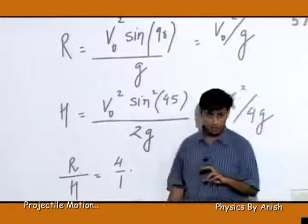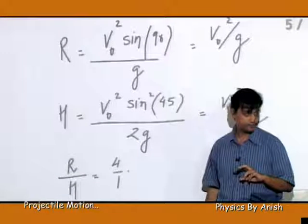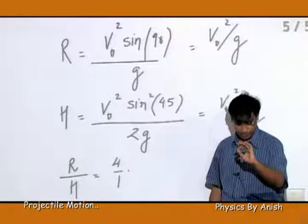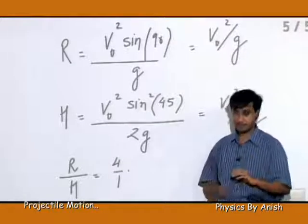So the ratio is 4 is to 1. Clear? Now for part B.